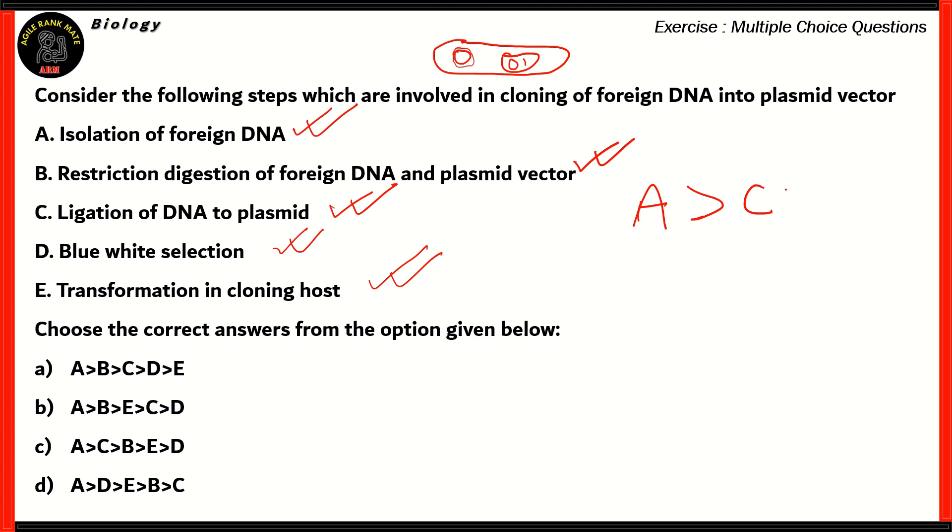And in order to separate those which have the transformation from those that are not, we use what's called a blue-white selection. So selection of the recombinant DNA, the recombinant bacteria from the non-recombinant ones. So A, then C, then B, and then E, and finally D. So this is how the right order is supposed to be. And if you look at our options, it's clear that option C is the right option.